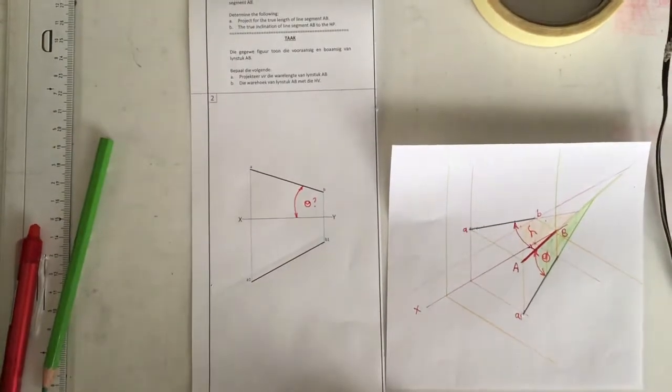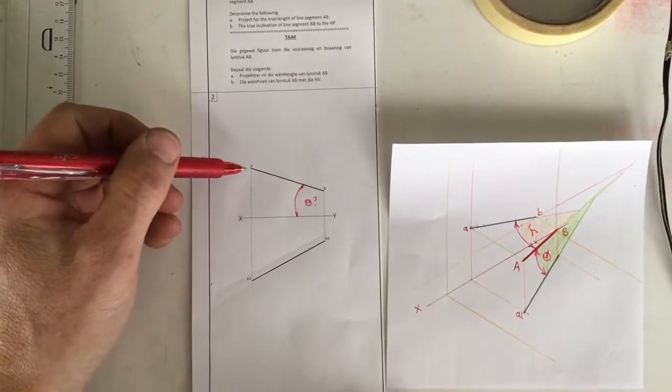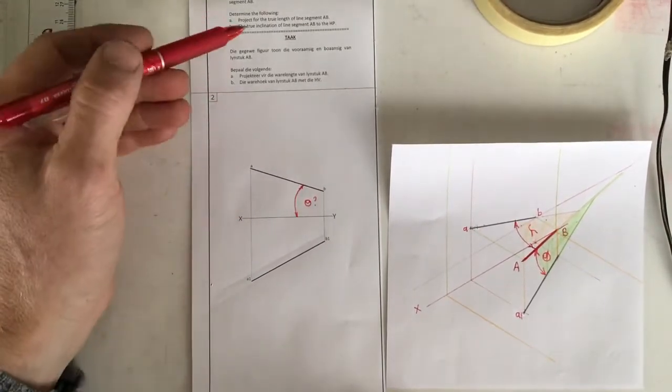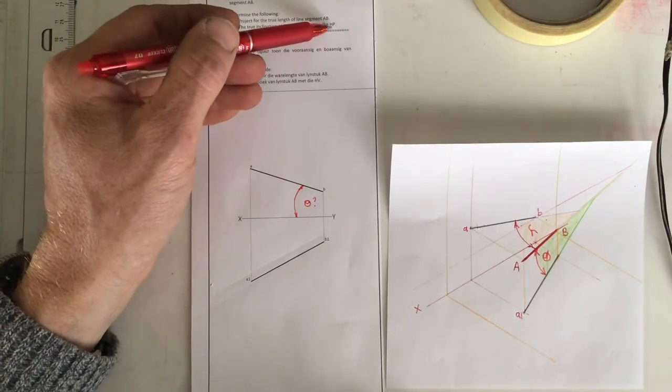Right, in this question on lines and points in space, they've asked us to find the true length of this line segment AB, and they've also asked us to find the true inclination of the line segment AB to the horizontal plane.